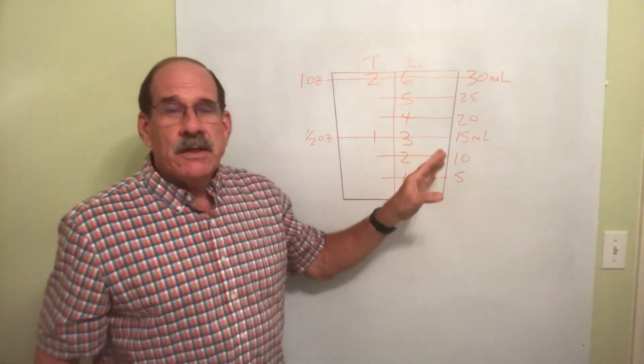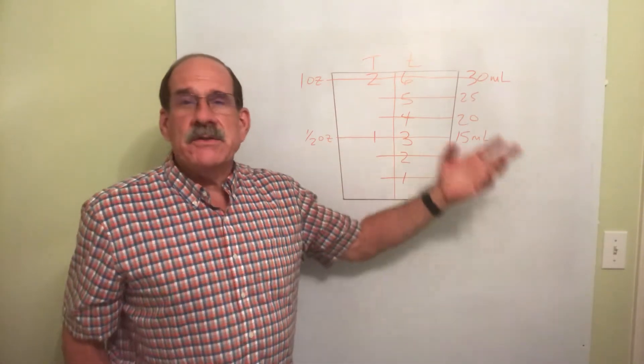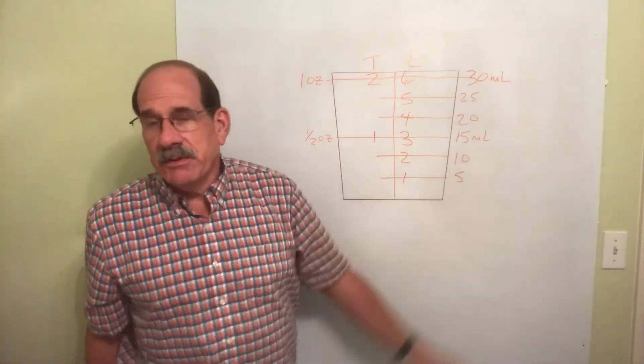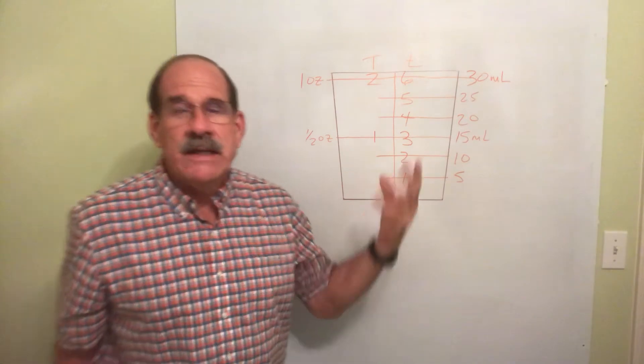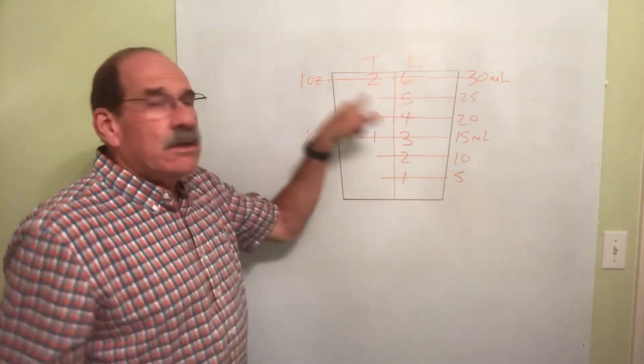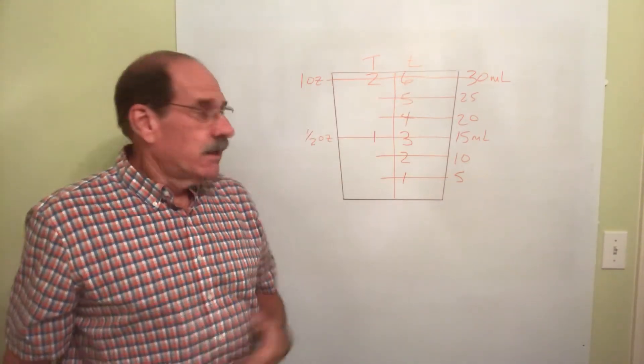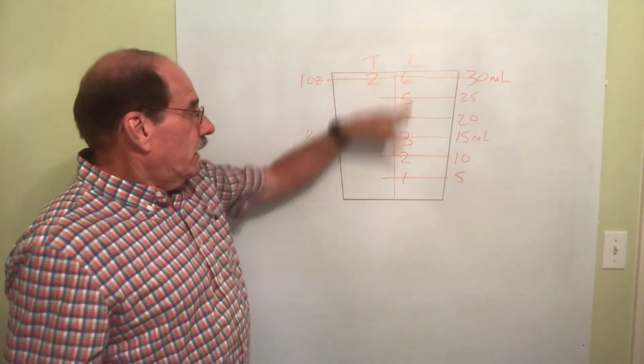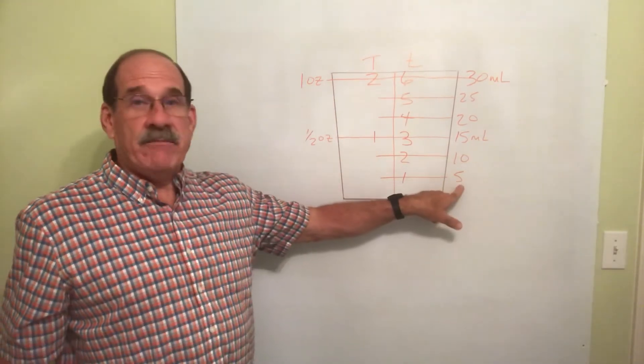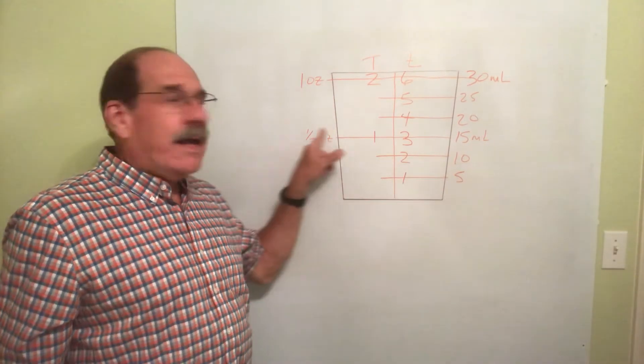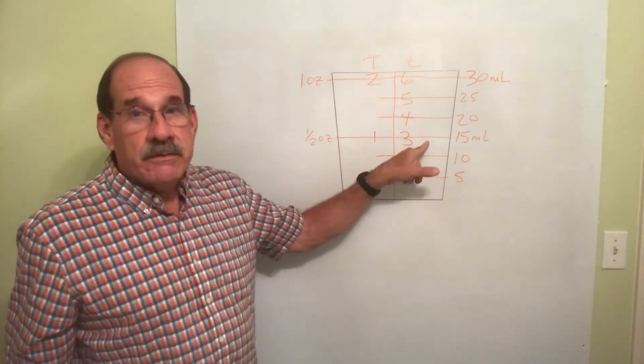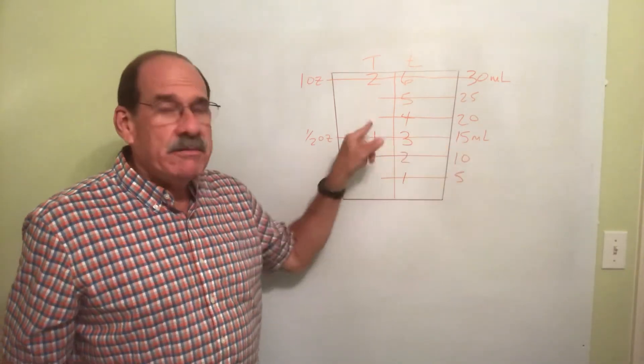So, any time you're converting, let's say, ounces to milliliters or milliliters to tablespoons or tablespoons to teaspoons or teaspoons to ounces, whatever, any one of these, you need to know how these compare. In fact, try this. One teaspoon is five milliliters. A half of an ounce is three teaspoons, 15 milliliters, et cetera.